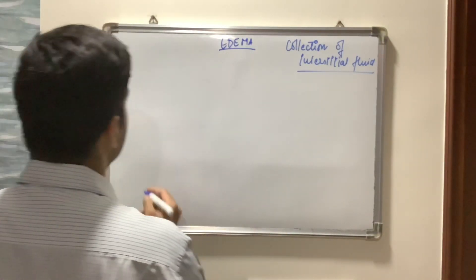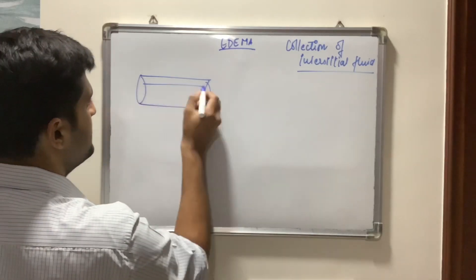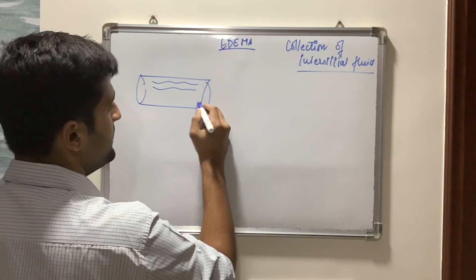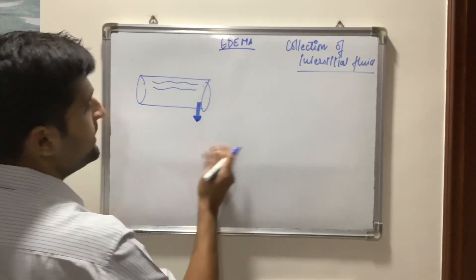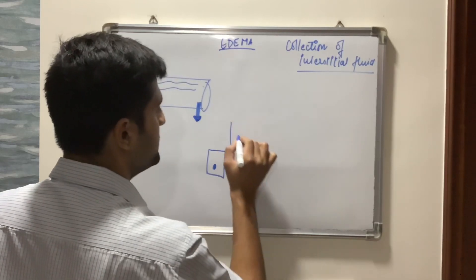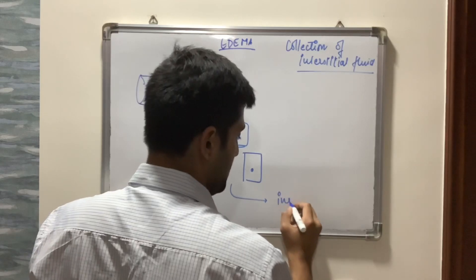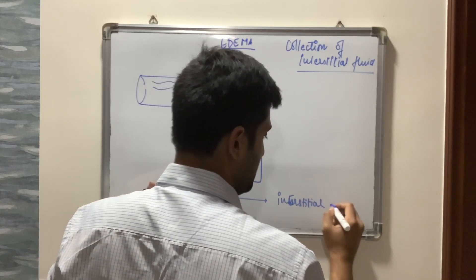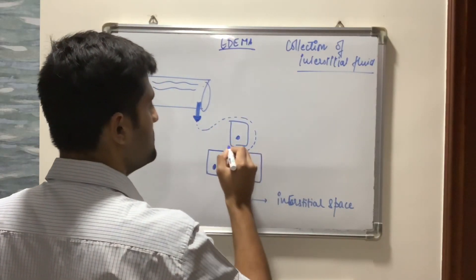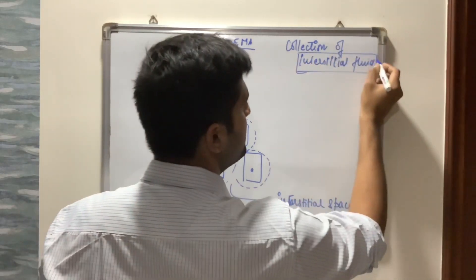To understand this, consider a blood vessel with blood in it. This blood has plasma, and this plasma moves out of the vessel and comes outside, surrounding the cells of the tissues. This space around the cells is known as the interstitial space. The fluid that comes out and surrounds these cells in the interstitial space is known as interstitial fluid.